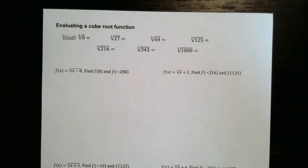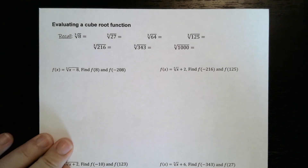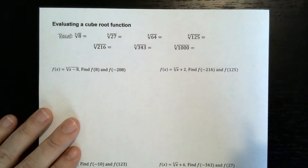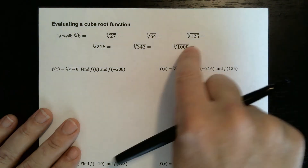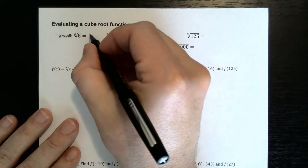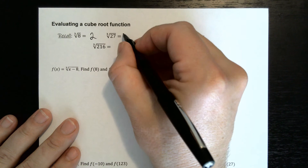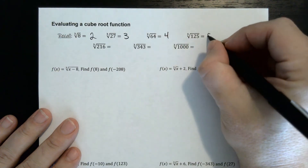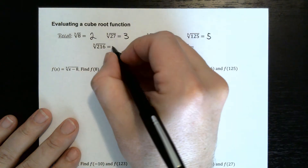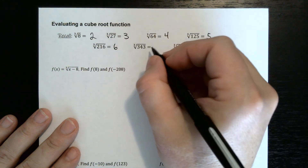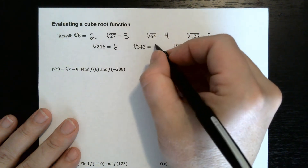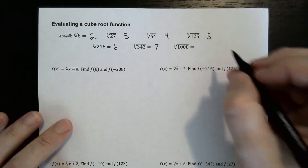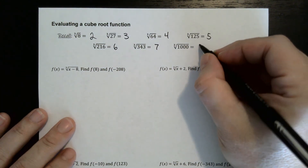Now we're moving on to evaluating cube root functions. A quick recall of perfect cubes: cube root of 8 is 2, cube root of 27 is 3, cube root of 64 is 4, cube root of 125 is 5, cube root of 216 is 6, cube root of 343 is 7, and cube root of 1000 is 10.